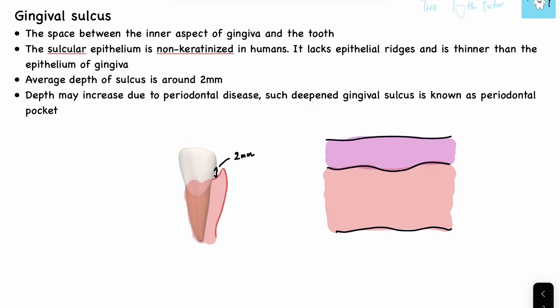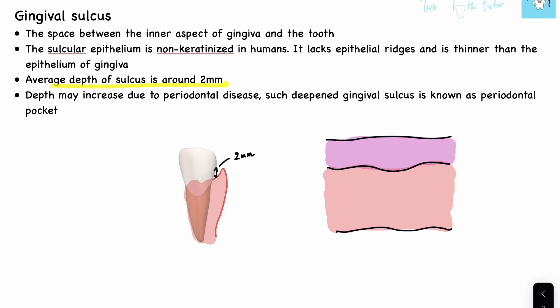The epithelium of the gingival sulcus is non-keratinized in humans. It lacks epithelial ridges — those ridges we used to see are absent — and it forms a smooth interface with the lamina propria. The average depth of the gingival sulcus is around two millimeters. If it goes deeper than this, we generally have something called a periodontal pocket, and it is mainly due to some disease.